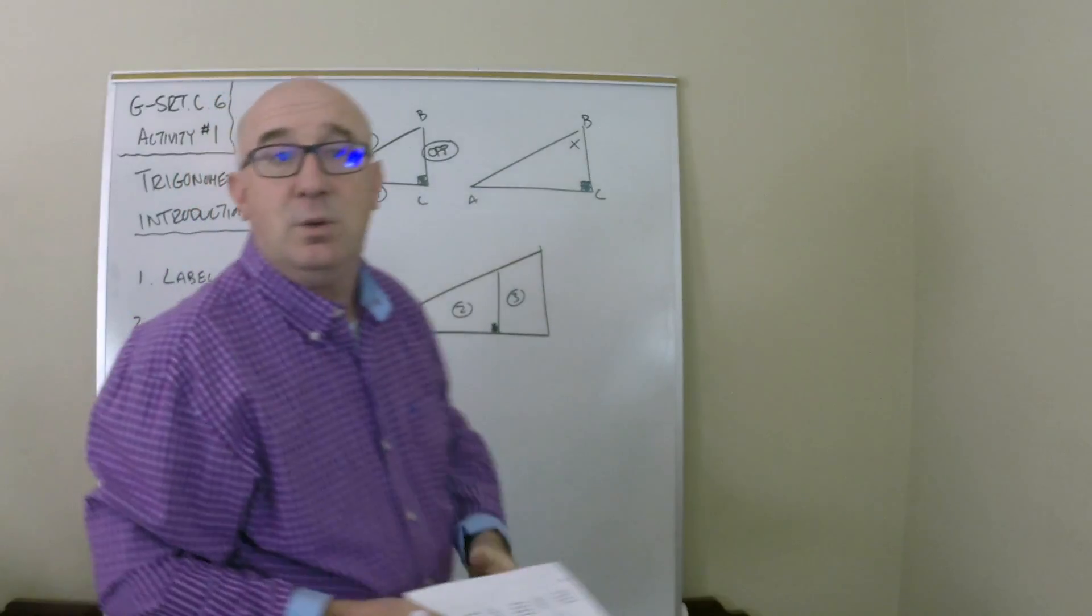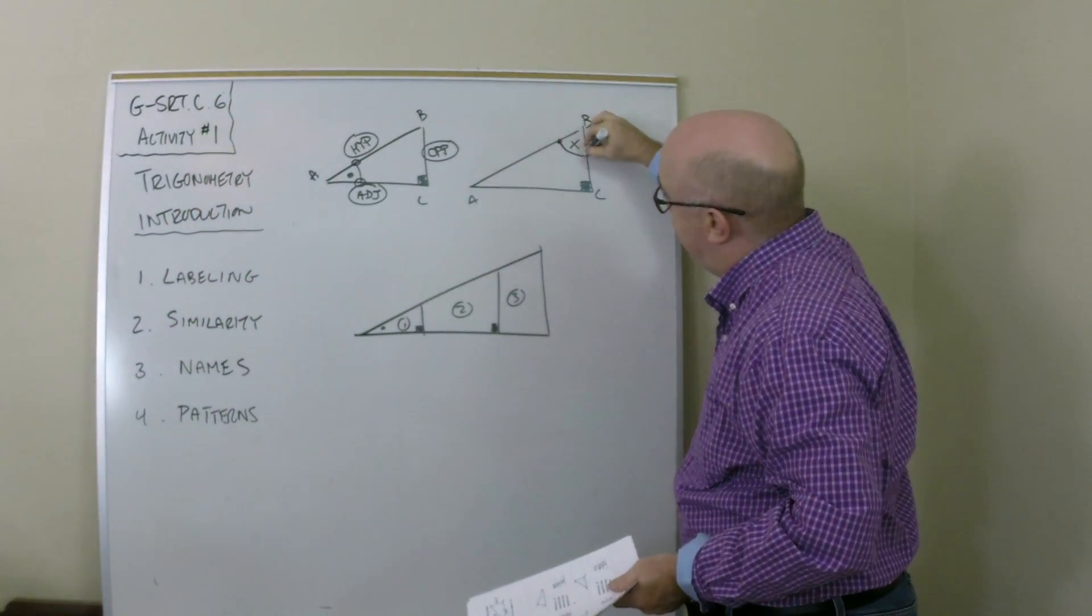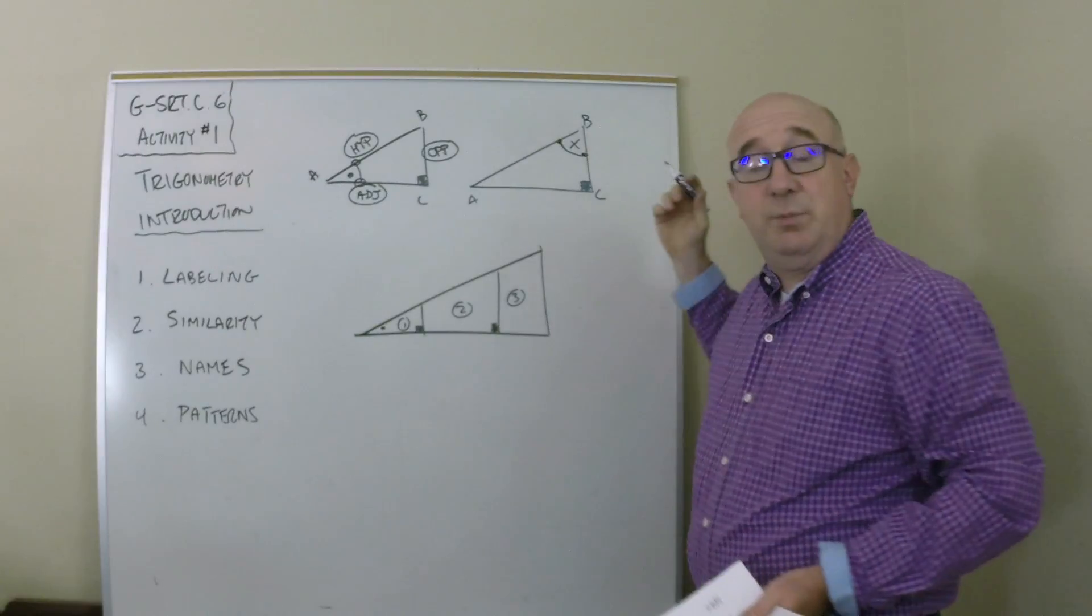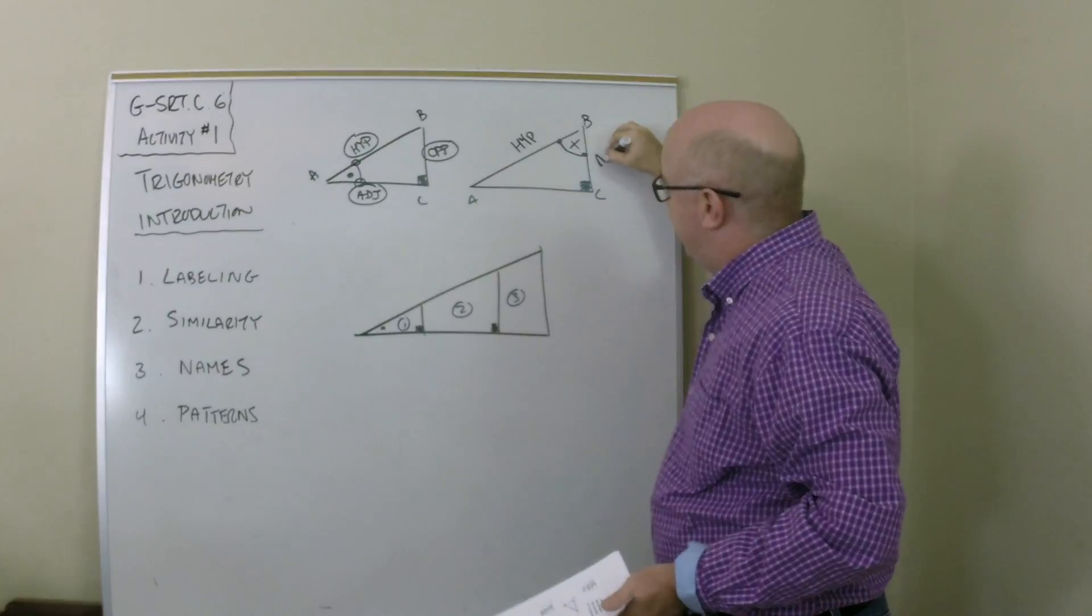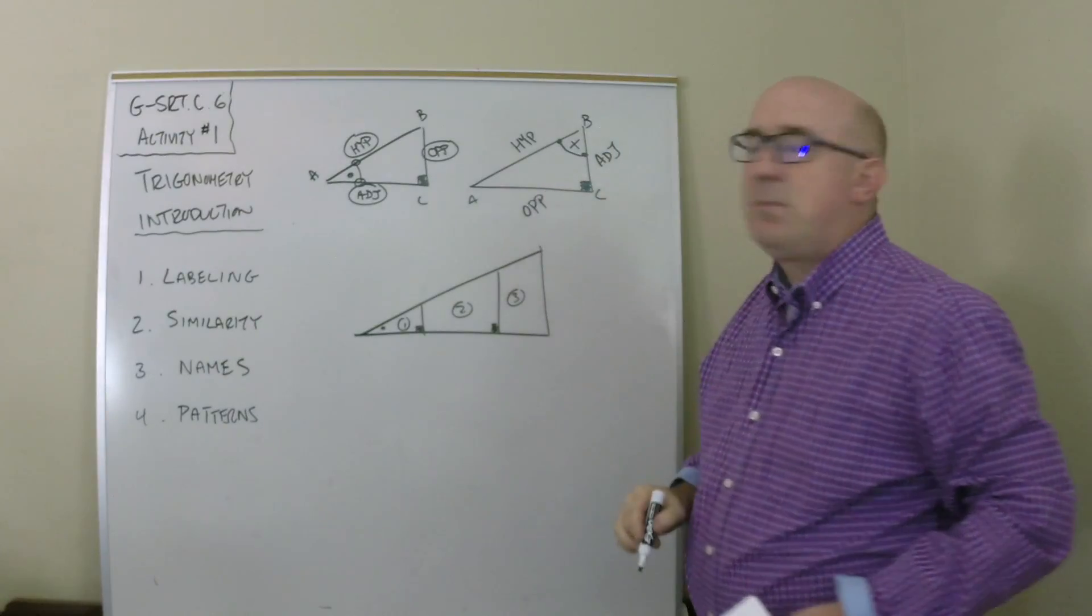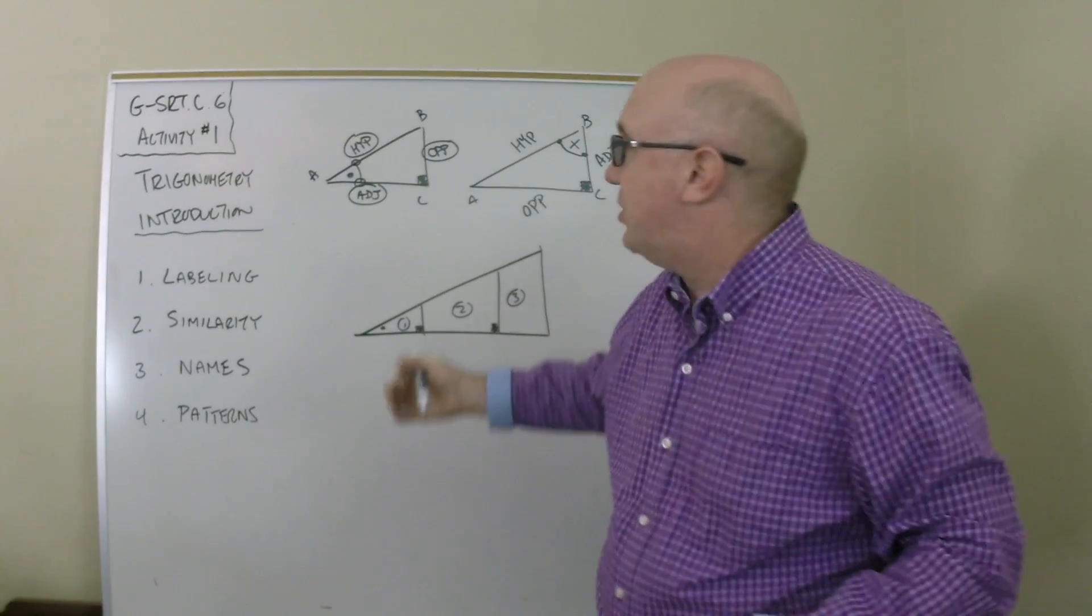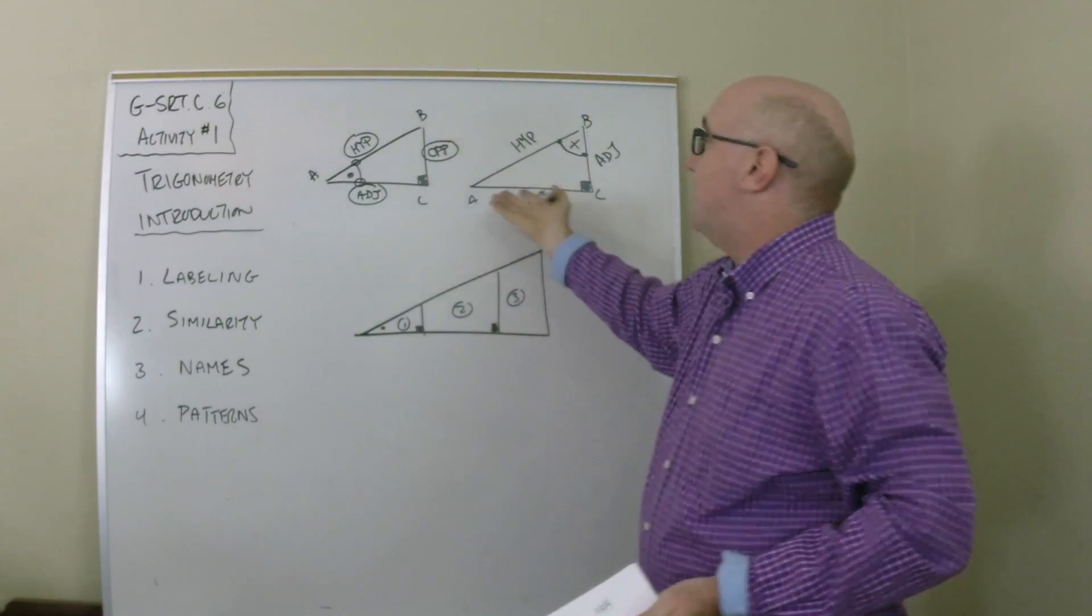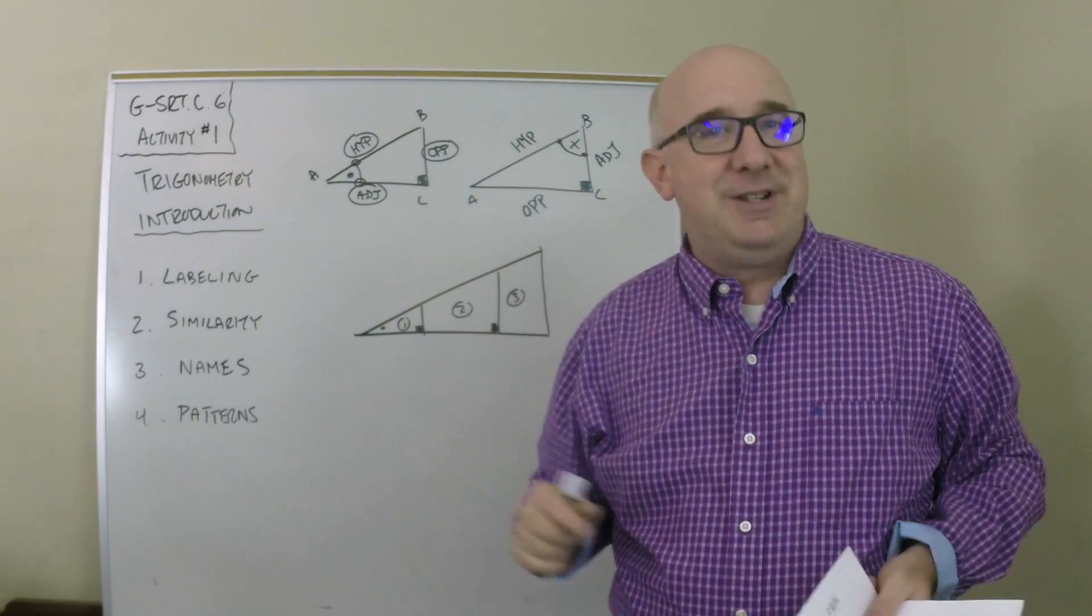If the reference angle were in the upper corner for instance, then its sides would be formed by the hypotenuse and the adjacent. Therefore, the opposite is over here. Be aware that the names move around. The opposite isn't always this one or sometimes it's this one. It is dependent on the reference angle.